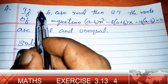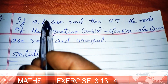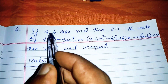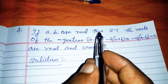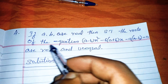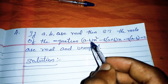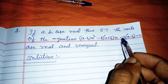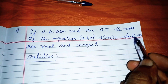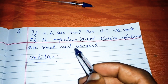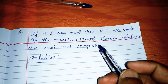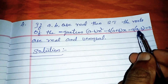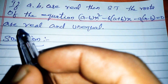Exercise 3.13, Problem 4: If a and b are real, then show that the roots of the equation (a minus b) x squared minus 6(a plus b) x minus 9(a minus b) equal to 0 are real and unequal. Given that a and b are real, we need to show this result.